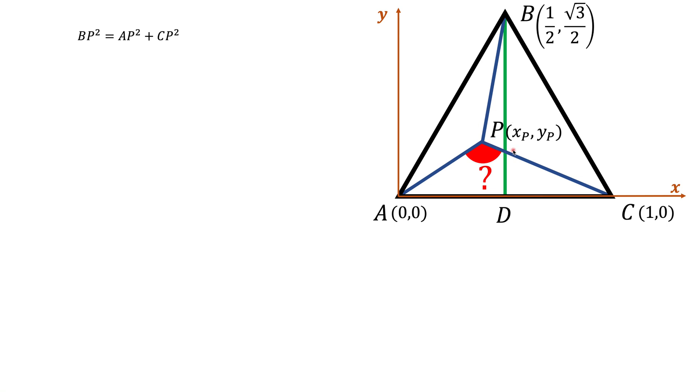Since we know coordinates of all these points, and we're going to say that coordinate of point P is xP, yP, we can quickly find BP squared, AP squared, and CP squared. For example, BP squared will be the horizontal coordinate of point B minus the horizontal coordinate of point P squared, plus the vertical coordinate of point B minus the vertical coordinate of point P squared.